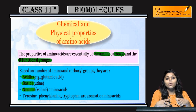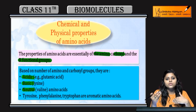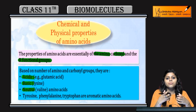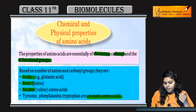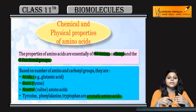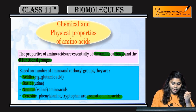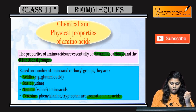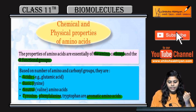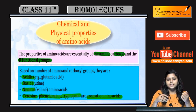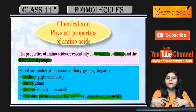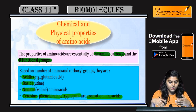Depending upon the presence or absence of an aromatic ring — if the aromatic ring is present, then we will have aromatic amino acids. This includes tyrosine, phenylalanine, and tryptophan. These are aromatic amino acids.